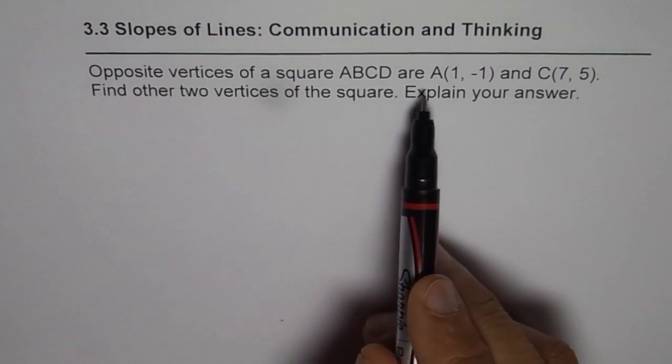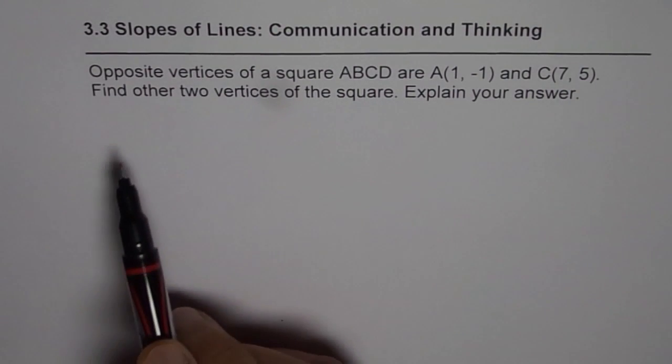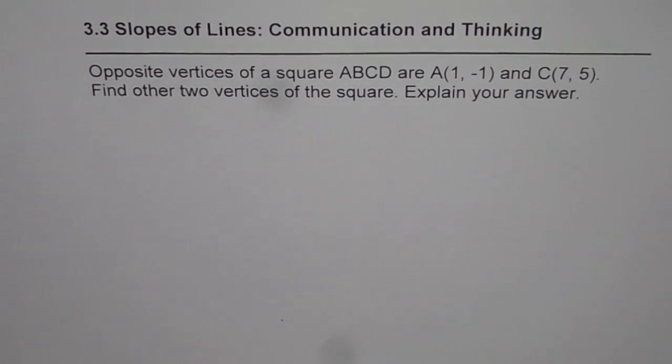Opposite vertices of a square ABCD are A(1, -1) and C(7, 5). Find the other two vertices of the square and explain your answer.